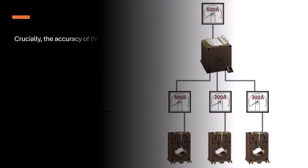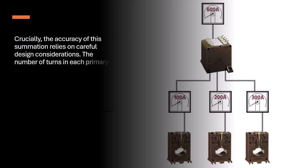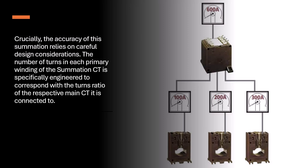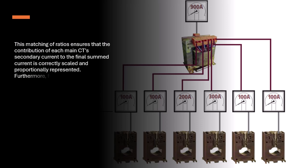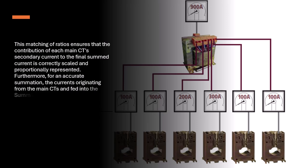The accuracy of this summation relies on careful design considerations. The number of turns in each primary winding of the summation CT is specifically engineered to correspond with the turns ratio of the respective main CT it is connected to. This matching of ratios ensures that the contribution of each main CT's secondary current to the final summed current is correctly scaled and proportionally represented. Furthermore, for an accurate summation, the currents originating from the main CTs and fed into the summation CT's primary windings must be in phase.